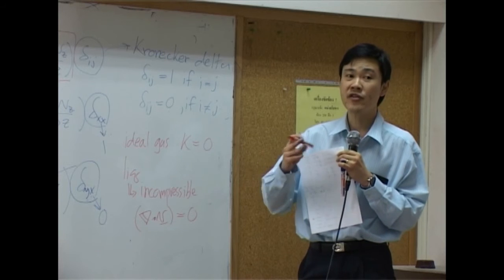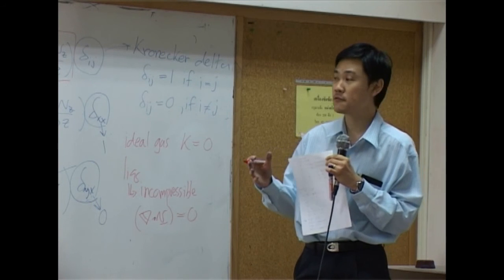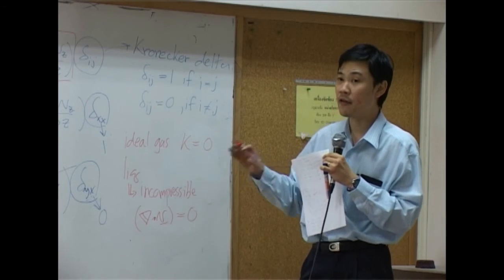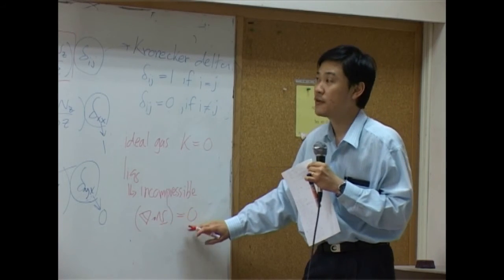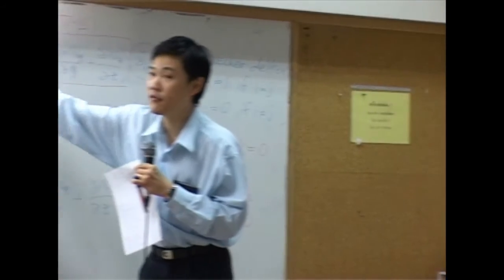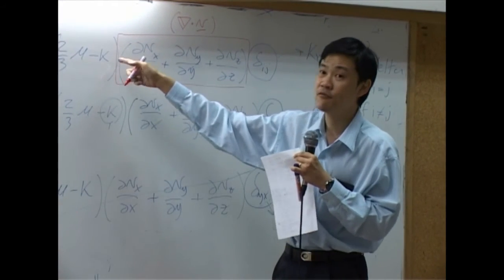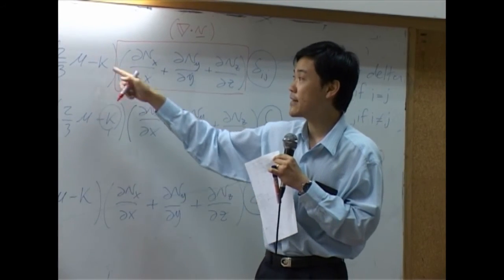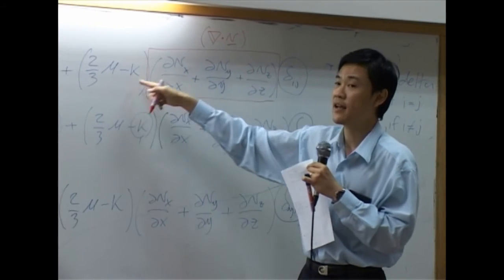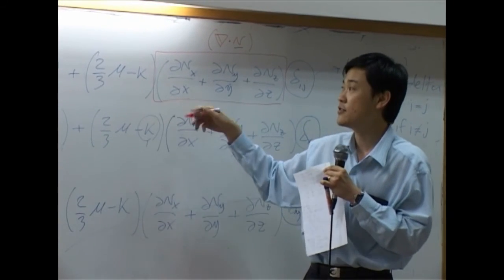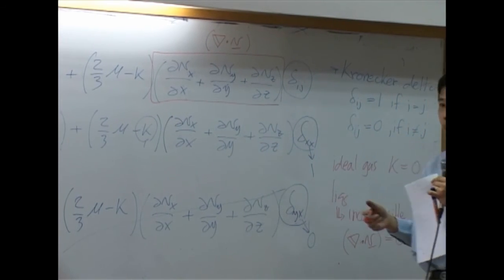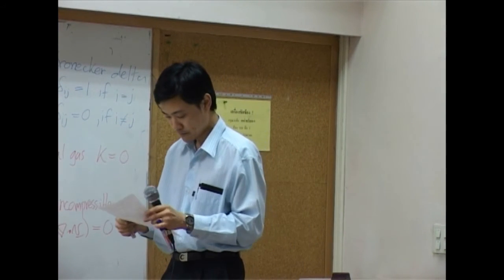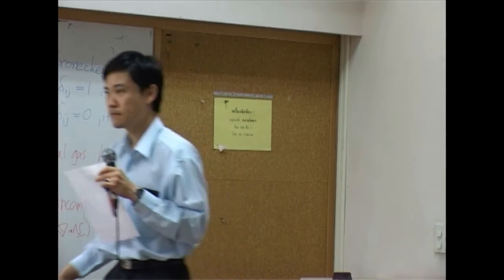So in general, when we talk about fluid flow, you can have either gas or liquid. Whenever you have gas, k is zero. Whenever you have liquid, del dot V is zero. When del dot V is zero, this term will be dropped. So k is rarely used, because when you have gas, k is zero, and when you have liquid, this term is zero. K has never been used. So in general, we do not use k anymore.